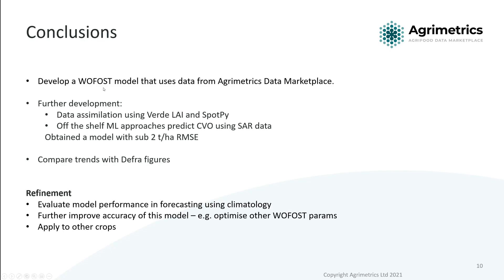In conclusion, we developed a WoFost model that uses data from the Agrometrics marketplace. We then supplemented this model with leaf area index and SAR via SpotPy and traditional machine learning approaches to help optimize the model. We ended up with a sub two tons per hectare root mean squared error and captured trends which are in line with DEFRA figures.